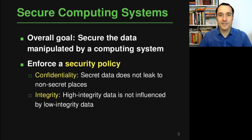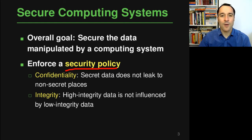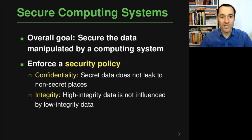Information flow analysis is a kind of program analysis typically used in the context of security, where the overall goal is to secure your computing system. Specifically, the goal is to secure the data manipulated by a computing system and to enforce a particular security policy. There are two kinds of policies that an information flow analysis can check, related to confidentiality and to integrity.